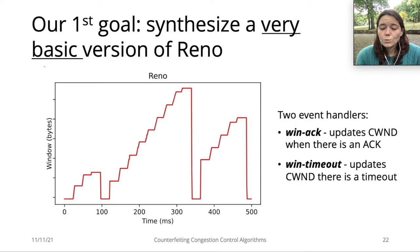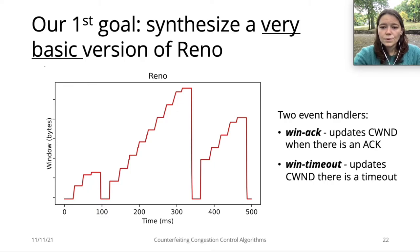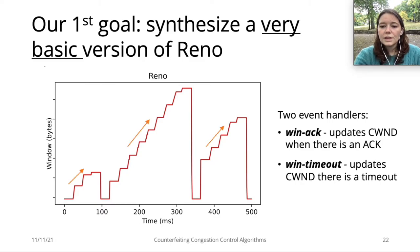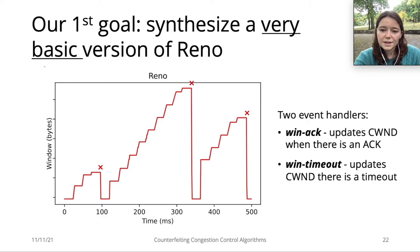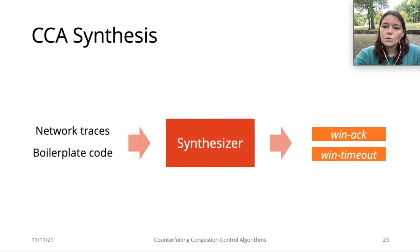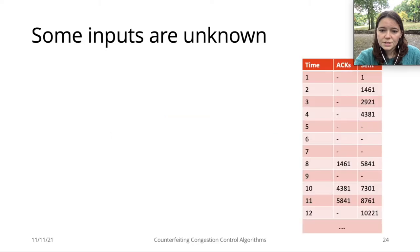In this paper, we take the first step towards CCA synthesis. We focus on synthesizing only a simplified version of RENO. In our simplified RENO, we consider the state to be just a congestion window, and we consider two event handlers. WinAC is the function that increases the window size when the CCA registers an ACK, and WinTimeout is the function that decreases the window size when a packet times out. We want to synthesize WinAC and WinTimeout from the information in the network traces.